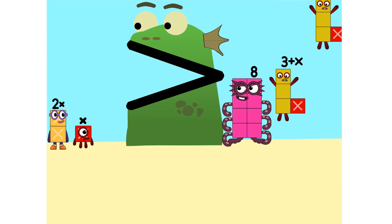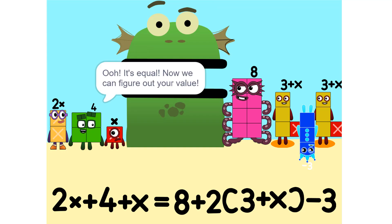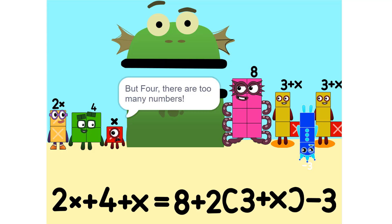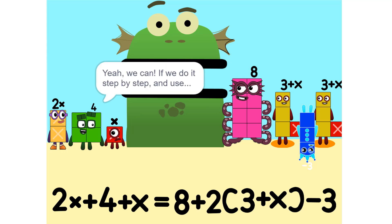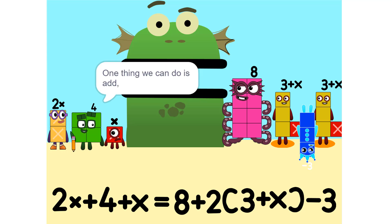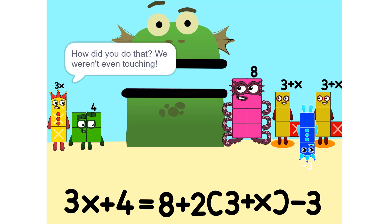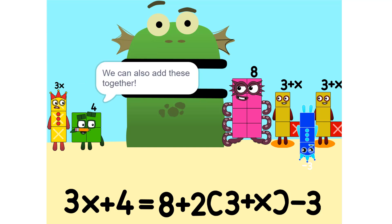Nope. Ooh, it's equal! Now we can figure out your value. But there are too many numbers — we'll never figure it out. Yeah, we can, if we do it step by step and use a pencil. So let's get started. One thing we can do is add these two together. How did you do that? We weren't even touching. They don't have to be. Could we do it if we were touching? Yeah, we can also add these together.